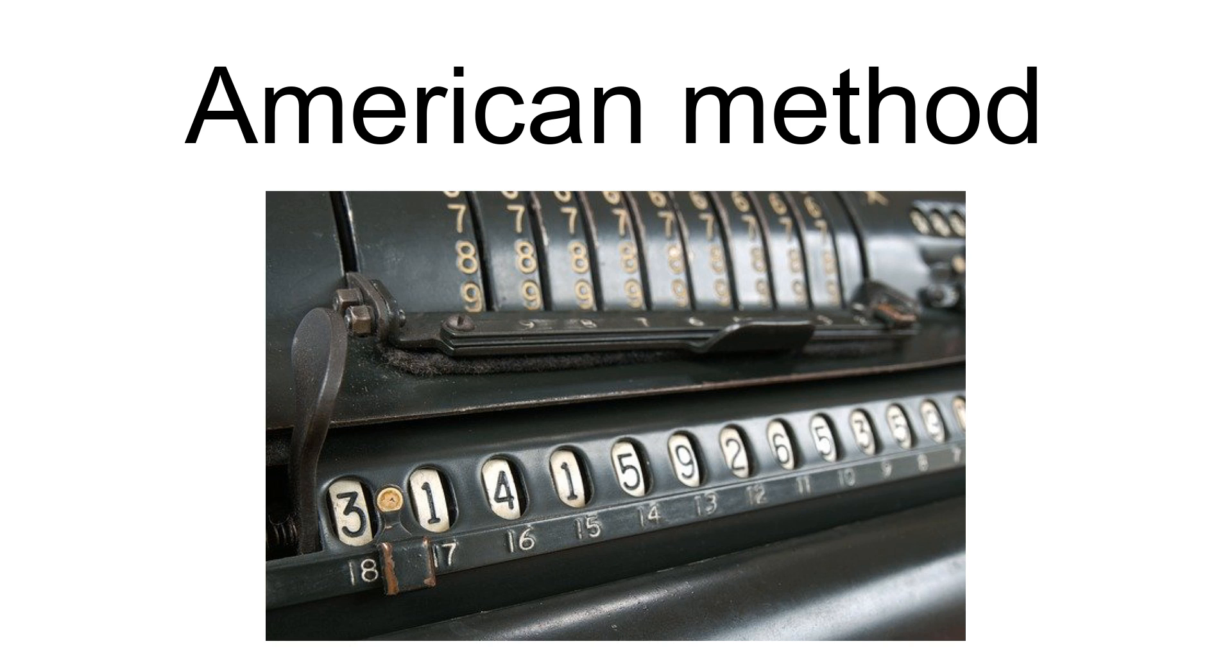In this method, each digit of the subtrahend is subtracted from the digit above it starting from right to left. If the top number is too small to subtract the bottom number from it, we add 10 to it. This 10 is borrowed from the top digit to the left, which we subtract 1 from. Then we move on to subtracting the next digit and borrowing as needed, until every digit has been subtracted.